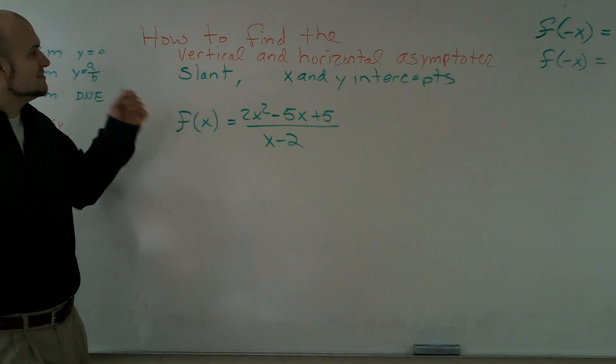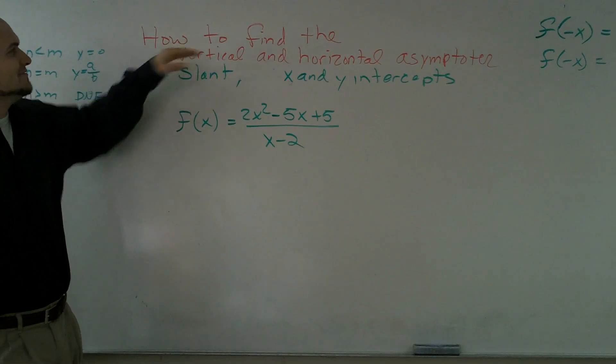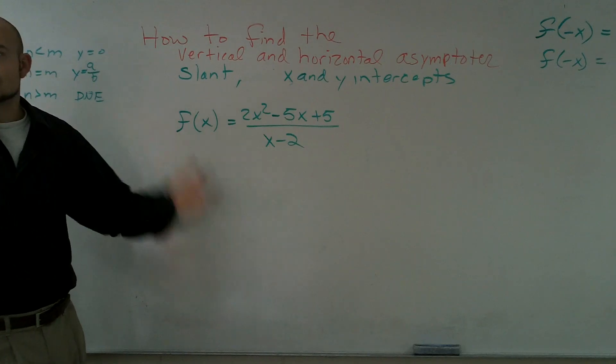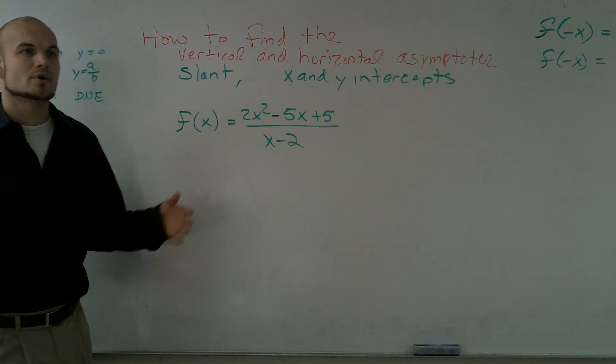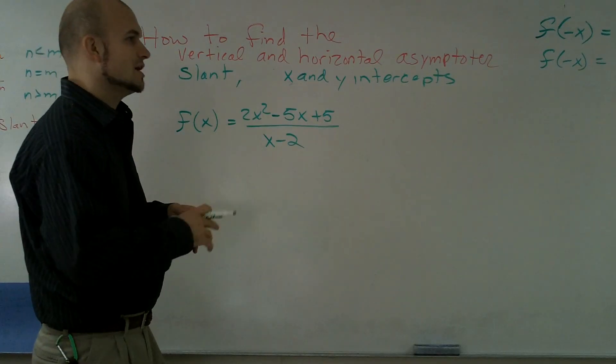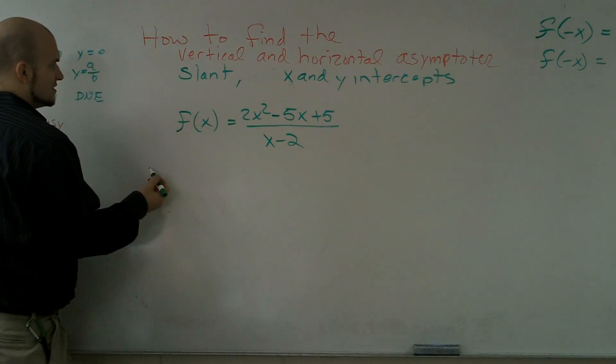How to find the vertical and horizontal asymptotes or the slant asymptote and the x and y intercepts. The first thing we're going to do is see what are the x and y intercepts because that's going to be the easiest thing to start off with.